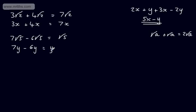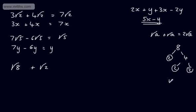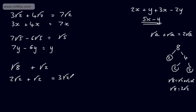What happens if we don't have like surds? Let's say I've got root 8 plus root 2. At the moment, that looks to be in its simplest form, as they're not like surds. In the last video, we looked at expressing root 8 in its simplest form. We prime factor it: 8 = 2 × 2 × 2, so root 8 = root 2 × root 2 × root 2, which gives us 2 root 2. So now we can write this as 2 root 2 plus root 2, which gives us 3 root 2. I'm using the rules from the last video to simplify these surds, rewrite them, and collect like surds.